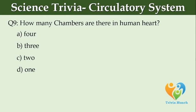How many chambers are there in the human heart? Option A: 4. Option B: 3. Option C: 2. Option D: 1.